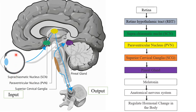From the optic nerve, light initiates travel through the retinohypothalamic tract and stimulates the suprachiasmatic nuclei — the key regulator — which further stimulates the paraventricular nuclei and superior cervical ganglia, resulting in the secretion of melatonin from the pineal gland. This melatonin regulates the secretion of various hormones such as thyroid hormones.